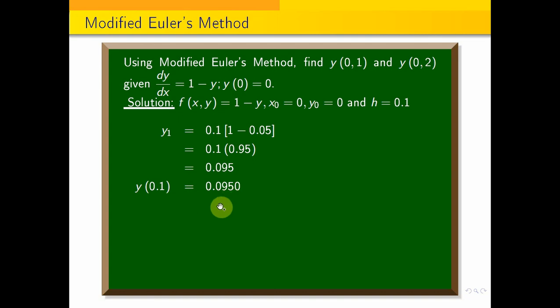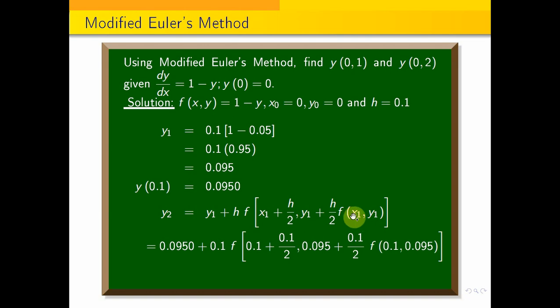Now, you see y2. The beginning is y2 equals 0.2. y2 equals 0.2. y1 is the formula. The y1 value, y1 is the value of 0.0950 plus h value 0.1 times f of x1 value 0.1 plus 0.1 by 2, y1 value 0.0950 plus h by 2, 0.1 by 2 times f of x1, y1. x1 is 0.1, y1 is 0.0950.